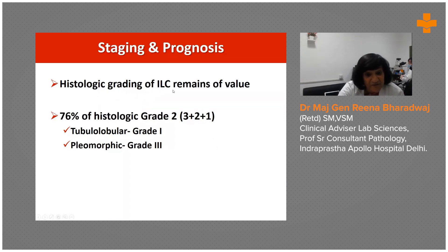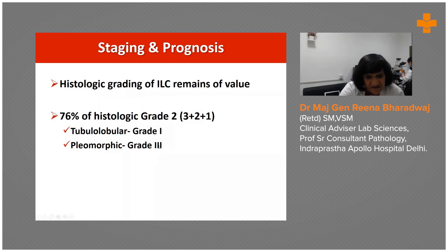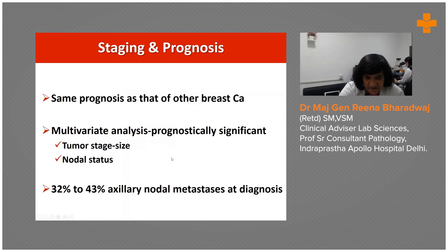Grading of lobular carcinoma remains of value and should be performed. The majority — around 75% — are grade 2. For tubular-lobular mixtures, grade as grade 1, because the tubular component pulls the grade down. When a pleomorphic component is present, it is better to upstage and call it grade 3. Even if e-cadherin is lost but cells appear more pleomorphic, call it grade 3.